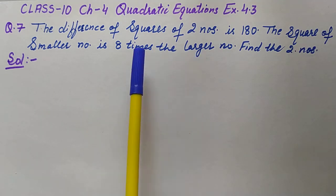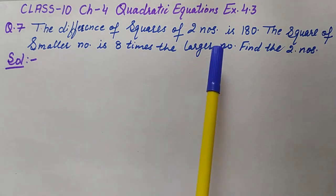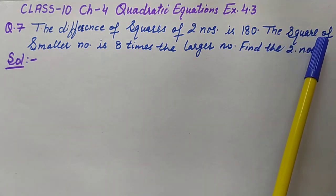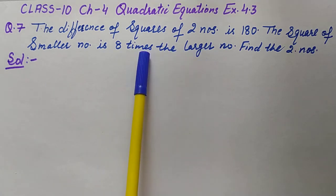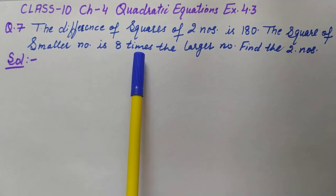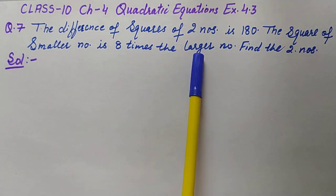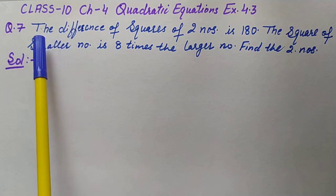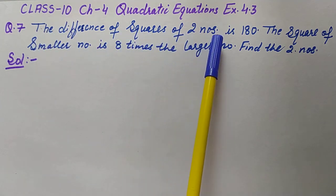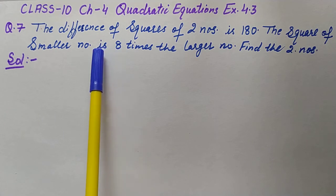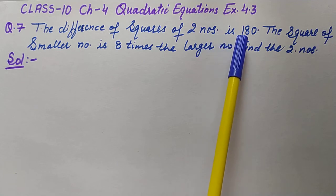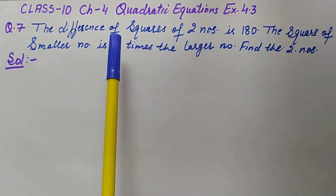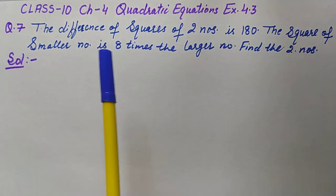In this question, there are two numbers — one is the larger number and one is the smaller number. The second condition is that the square of the smaller number is eight times the larger number. The first condition is that the difference of squares of the two numbers is 180, meaning large number squared minus small number squared equals 180.